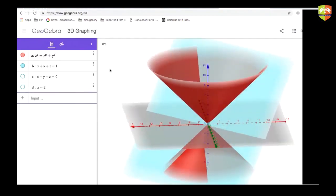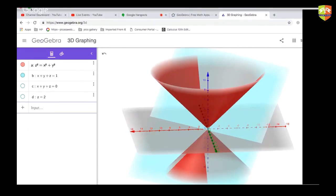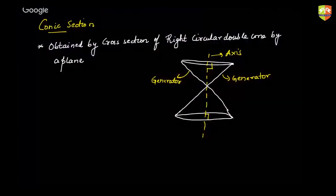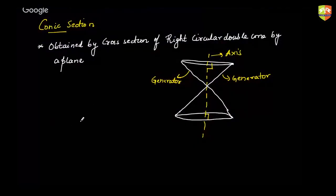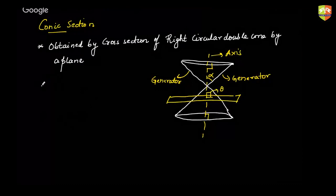Let me brush you through the basics. When you cut the cone by a plane, let's call the semi-vertical angle of the right circular cone alpha, and the angle between the plane and the axis theta. If theta is 90 degrees, it generates a circle. If the plane passes through the meeting point of the double cone, the circle would be a point circle.